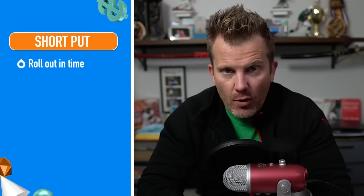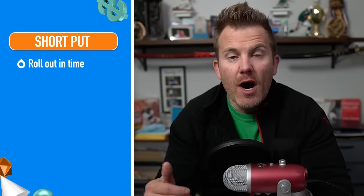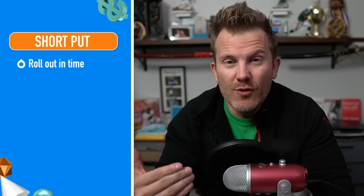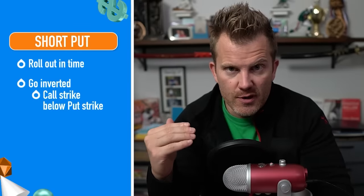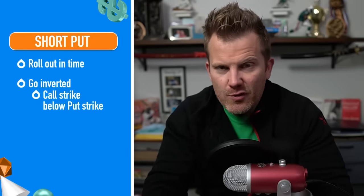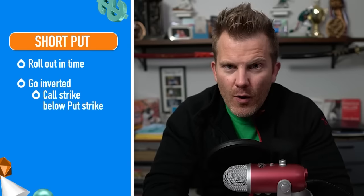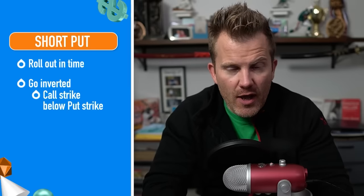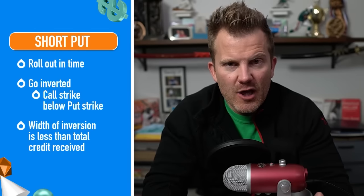If the stock falls way below your short put strike, roll out in time for duration and extrinsic value, but when adding a short call you might want to go straight to an inverted strangle — your short call strike below your short put strike. This more aggressively neutralizes deltas while still bringing in credits, adding extrinsic value, and widening break-even points. Just make sure the width of your inversion is less than the total credits collected, so you're not locking in a loss for the cycle.